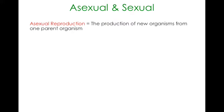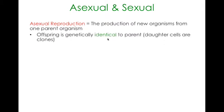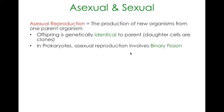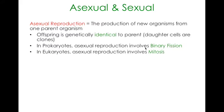Let's compare sexual and asexual reproduction. Asexual reproduction is the production of new organisms from one parent organism - the key word is that you've only got one parent. Offspring are genetically identical to their parents; we refer to the daughter cells as clones because they have the same DNA. In prokaryotes that is binary fission, and in eukaryotes it involves mitosis, which is what our cells do in order to reproduce, grow, and repair.